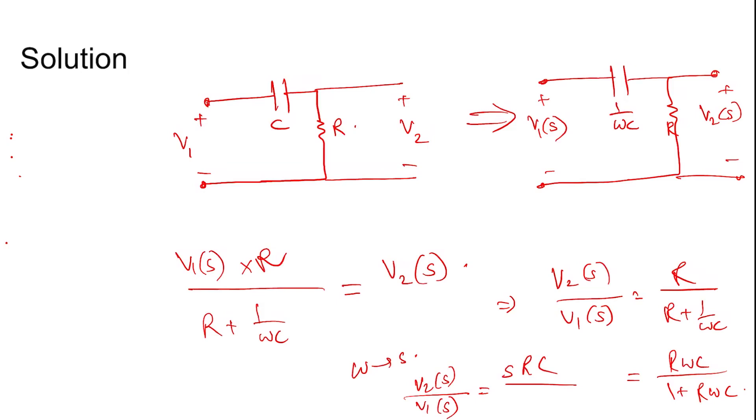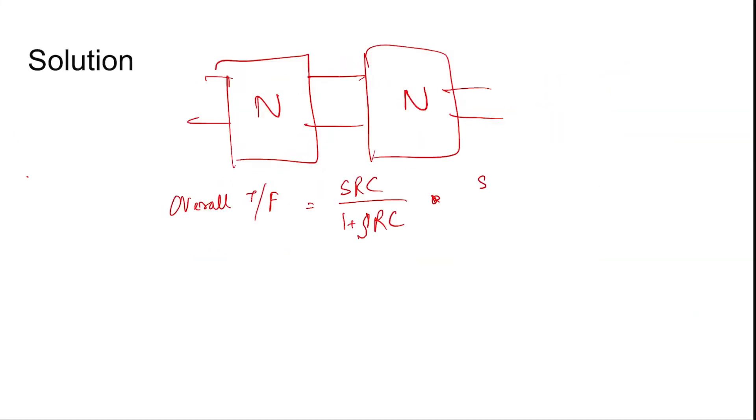Now this is the first network cascaded with the second network where both are identical. Then the overall transfer function is sRC by 1 plus sRC cascaded with another sRC by 1 plus sRC. Transfer functions will get multiplied.